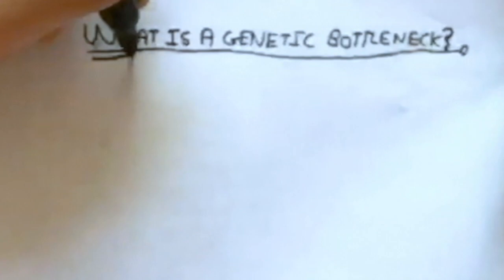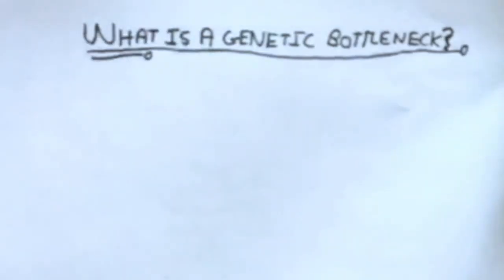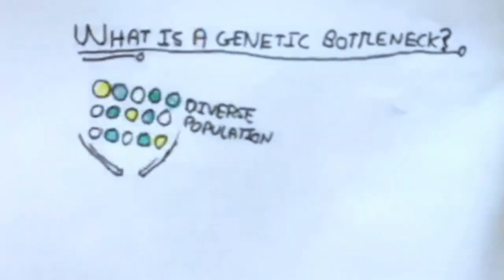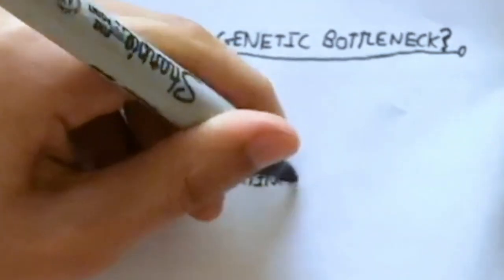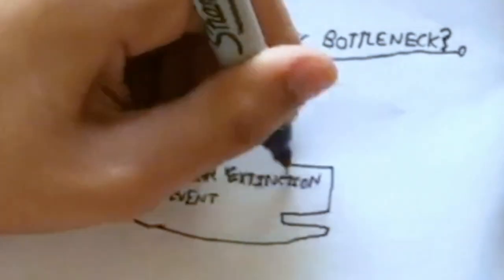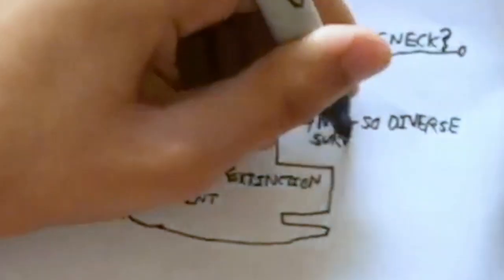To start off with, what is a genetic bottleneck? Well, if a population that is initially extremely diverse, filled with many individuals that each have unique genomes, experiences near extinction or becomes endangered, a genetic bottleneck occurs. This is when the few individuals who survive are far less diverse than the initial group.